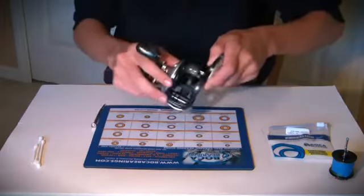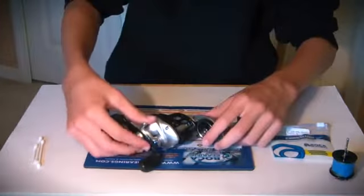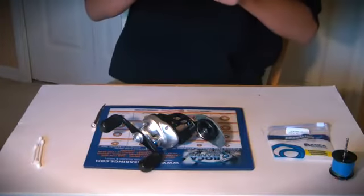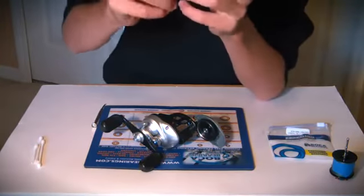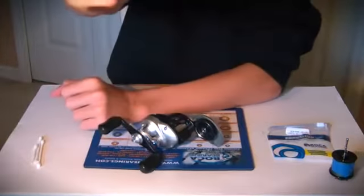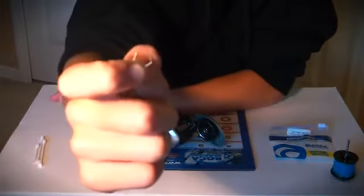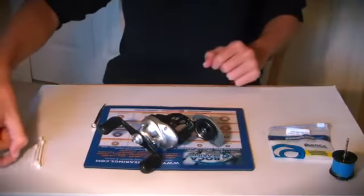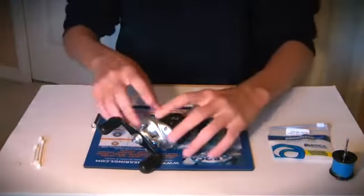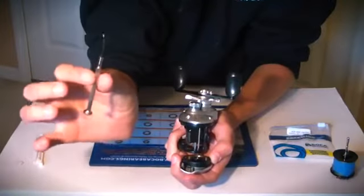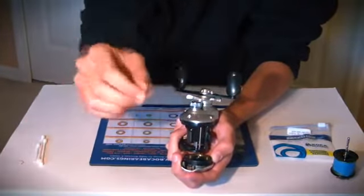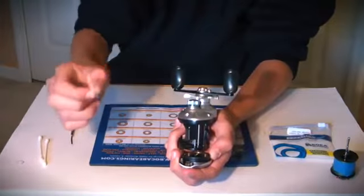Okay, now you got the C-clip out. Just be careful that this doesn't go flying anywhere. This is a very important piece. It does hold your bearing into the side there. So if you don't have that little metal piece right there, your bearing will fall out. So what I'm going to do is get the flat head screwdriver, or you could use a Q-tip.